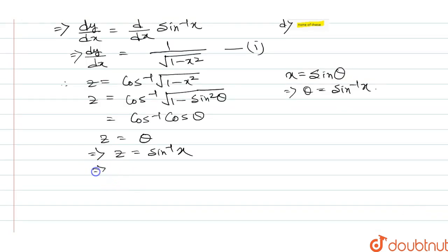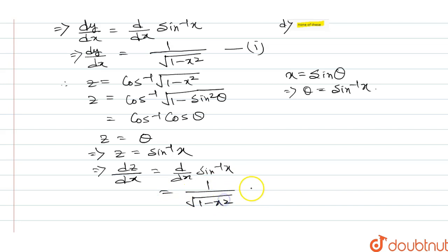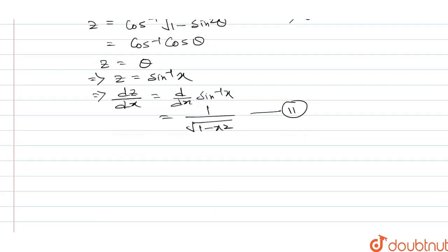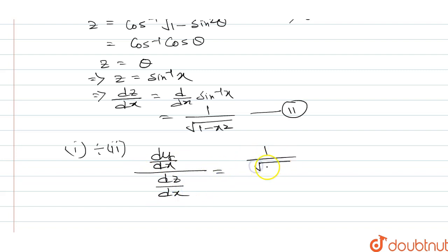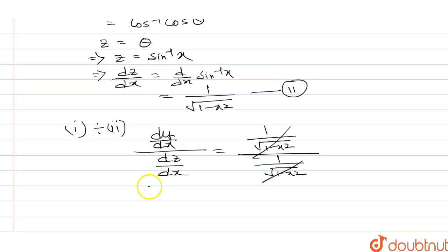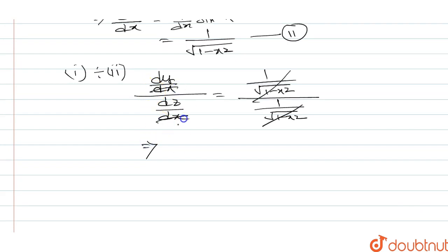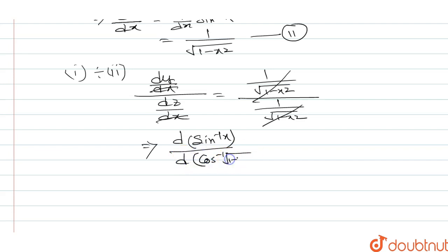Now, taking derivative with respect to x on both sides: dz/dx equals d/dx of sin inverse x, and d/dx of sin inverse x is 1 divided by root of 1 minus x squared. Now, dy/dx divided by dz/dx equals 1 over root of 1 minus x squared, divided by 1 over root of 1 minus x squared. Since y equals sin inverse of x and z equals cos inverse of root of 1 minus x squared, the left-hand side simplifies to d of sin inverse x divided by d of cos inverse of root of 1 minus x squared, which equals 1.